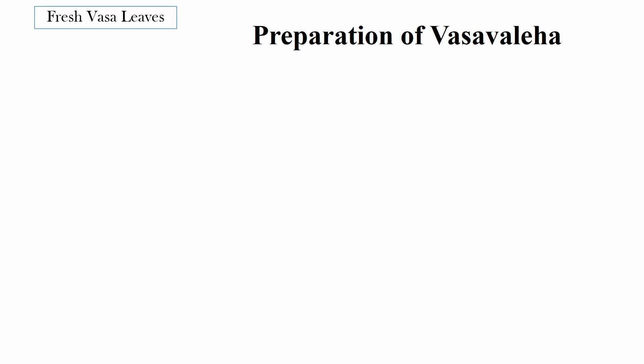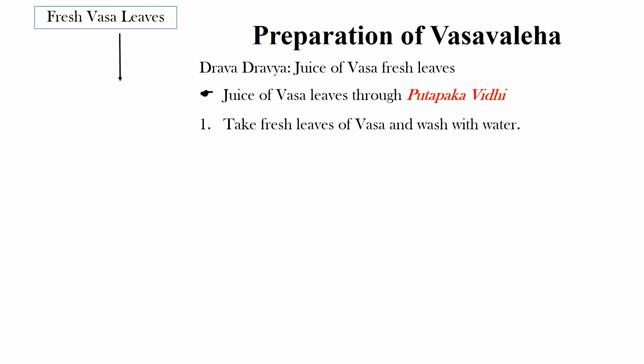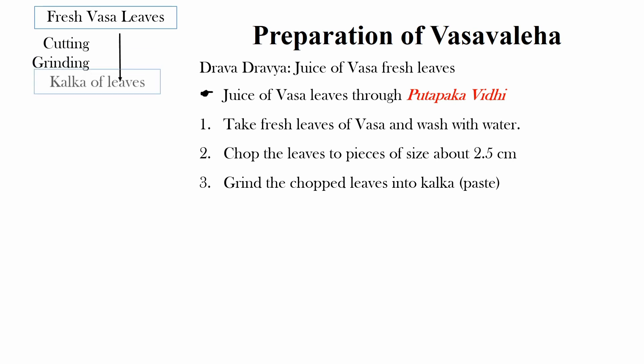Now coming to the preparation of Vasa Avaleha. The liquid component, i.e. Dravya Dravya, is juice of fresh Vasa leaf, which is obtained through Putapaka Vidhi. For Putapaka Vidhi, take fresh leaves of Vasa and wash with water. Chop the leaves into pieces of about 2.5 cm. Grind the chopped leaves into Kalka.